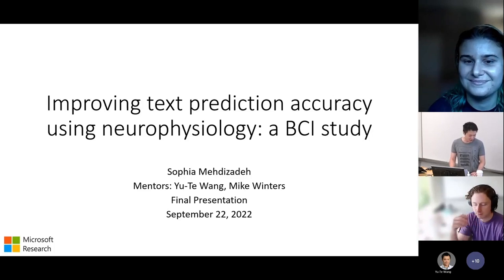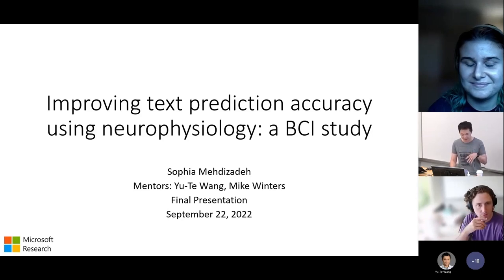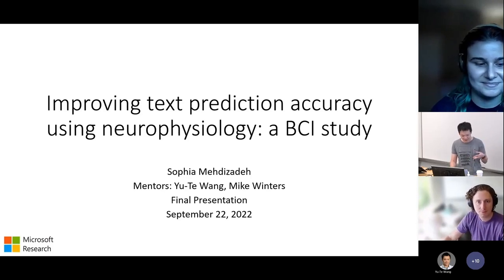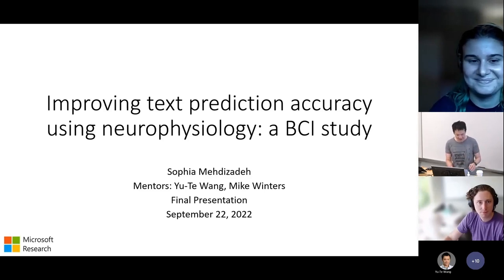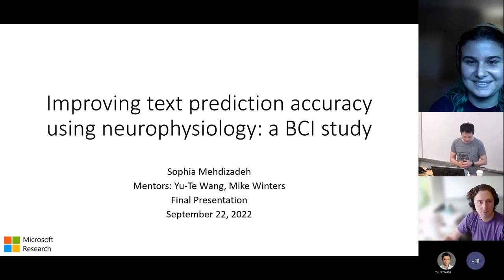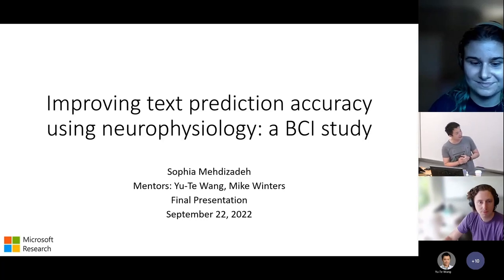She managed to design and implement the experiment protocol, come here for one week, collect data for 10 participants, go back, take a two-week break, and then analyze all the results in 12 weeks. It's very impressive. The topic of today's presentation is improving text prediction accuracy using neurophysiological signals. So Sophia, please.